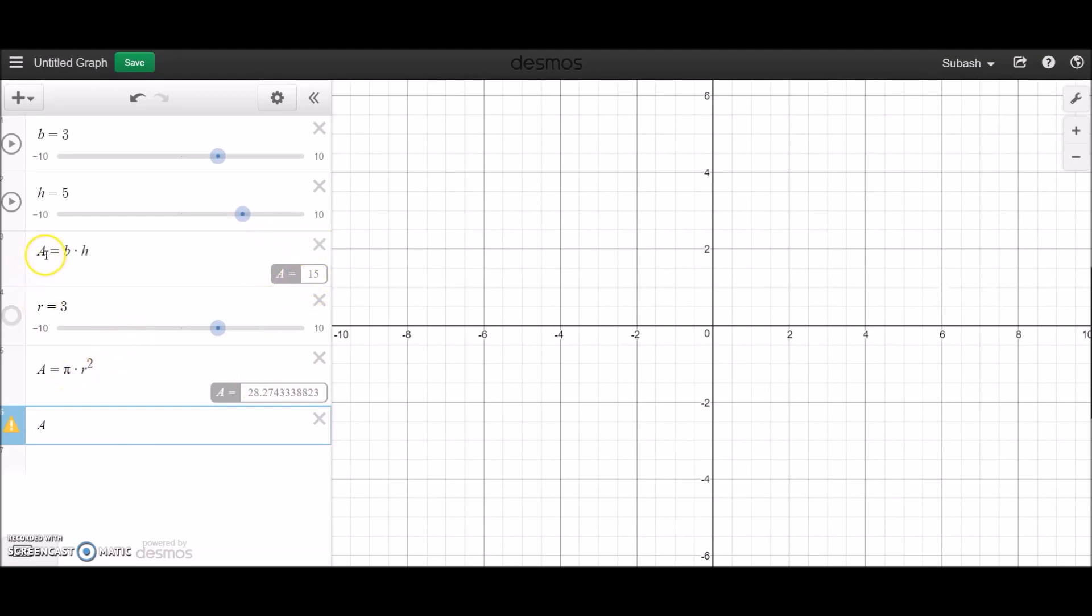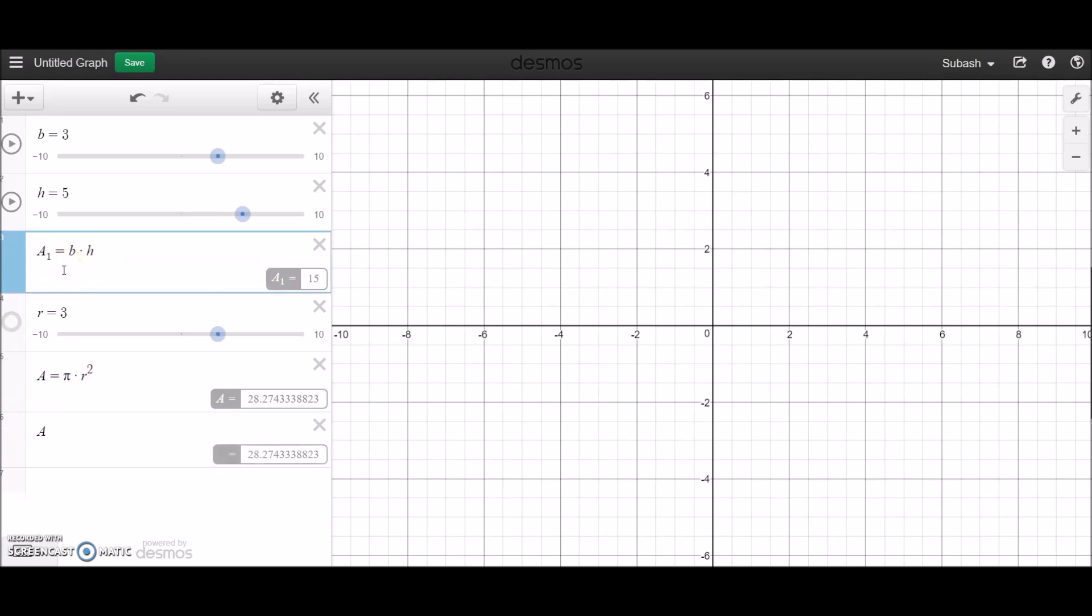So what I could do is I could actually rewrite this as what I'd shown you guys before. I could write it as a1 and I could write it as a2 if I want to. But what I'm trying to demonstrate is I'm going to leave this one as a because then you can see in the sixth line, a is equal to the same thing as this.